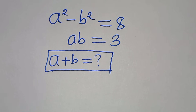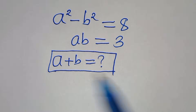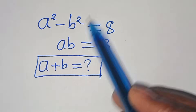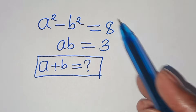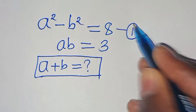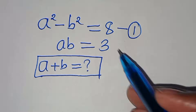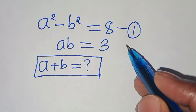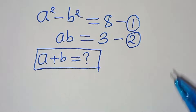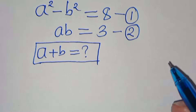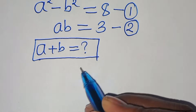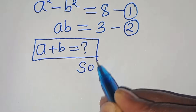Welcome everyone. We have a nice algebra problem: a squared minus b squared equals 8 — let's call this equation 1. And a times b equals 3 — let's call this equation 2. Now, what is the value of a plus b? Let's provide a solution.